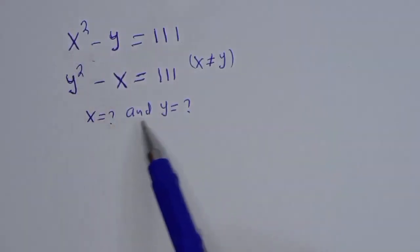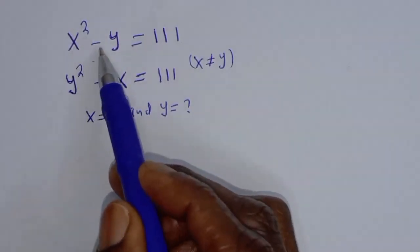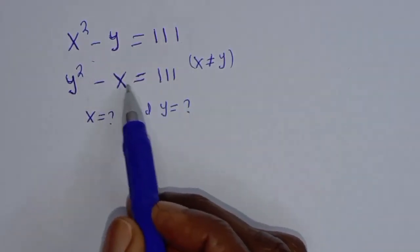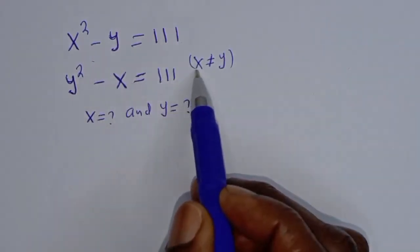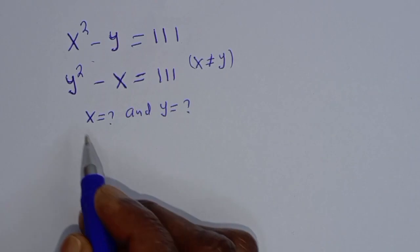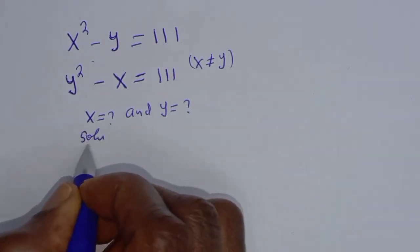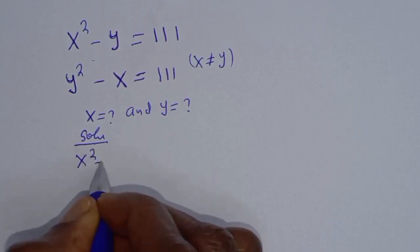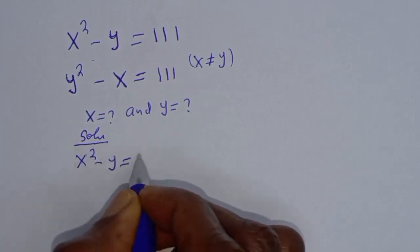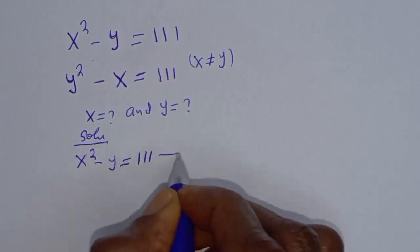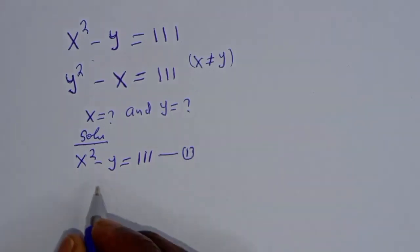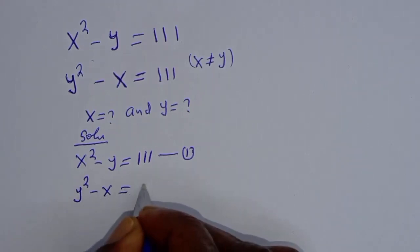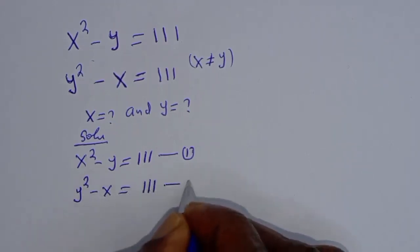How to solve for x and y from this given problem: x squared minus y is equal to 111 — let's call this equation 1 — and y squared minus x is equal to 111 — let's call this equation 2 — provided x is not equal to y.